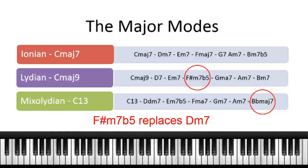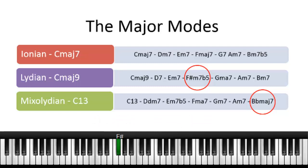The F sharp is a half step above G, so you're basically adding a half-step passing chord by replacing the D with the F sharp, then going to G, and then back to one.